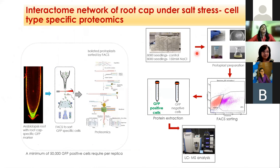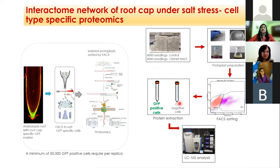The first thing in this experimental design was to develop a plant with a GFP tag only on the root cap cells, which we achieved by tagging a root cap specific promoter with GFP. We then used this plant for salt stress treatment. Root tips were collected, protoplasts were isolated, and these were subjected to FACS sorting, which separates GFP-positive cells (root cap cells) from GFP-negative cells (non-root cap cells). Proteins were then extracted from both samples separately and subjected to LC-MS analysis.